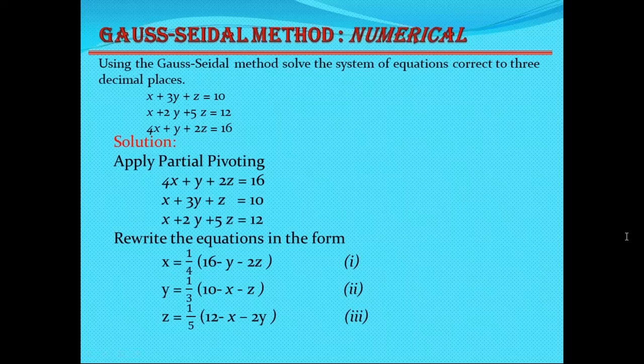Initially we put the Y and Z values as 0, then we get the new value of X. This new value of X is immediately used in equation 2, along with Z equal to 0, to get the new value of Y. Then the new X and new Y are put into equation 3 to get the new value of Z. The same process is repeated to get the solution.